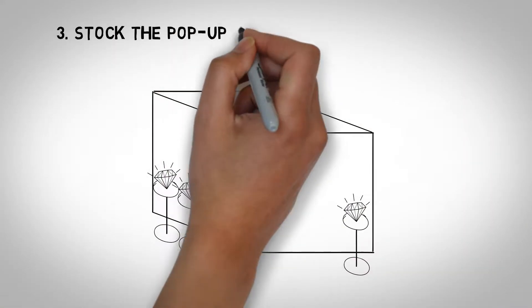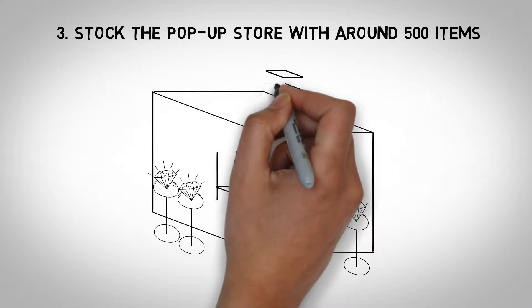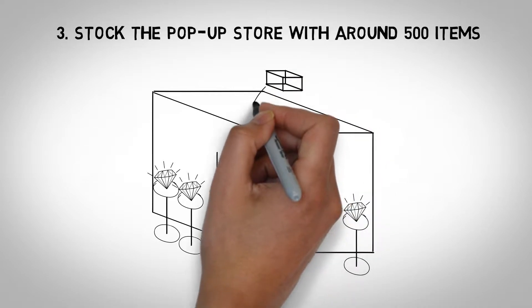3. Stock the pop-up store with around 500 items. It's like a big vending machine. A really cool, life-size, robotic vending machine.